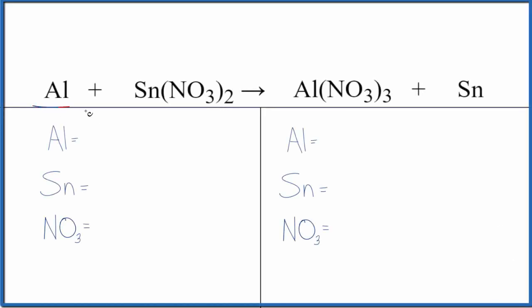Let's balance the equation for aluminum plus tin(II) nitrate. We'll also take a look at the type of reaction and write the states.